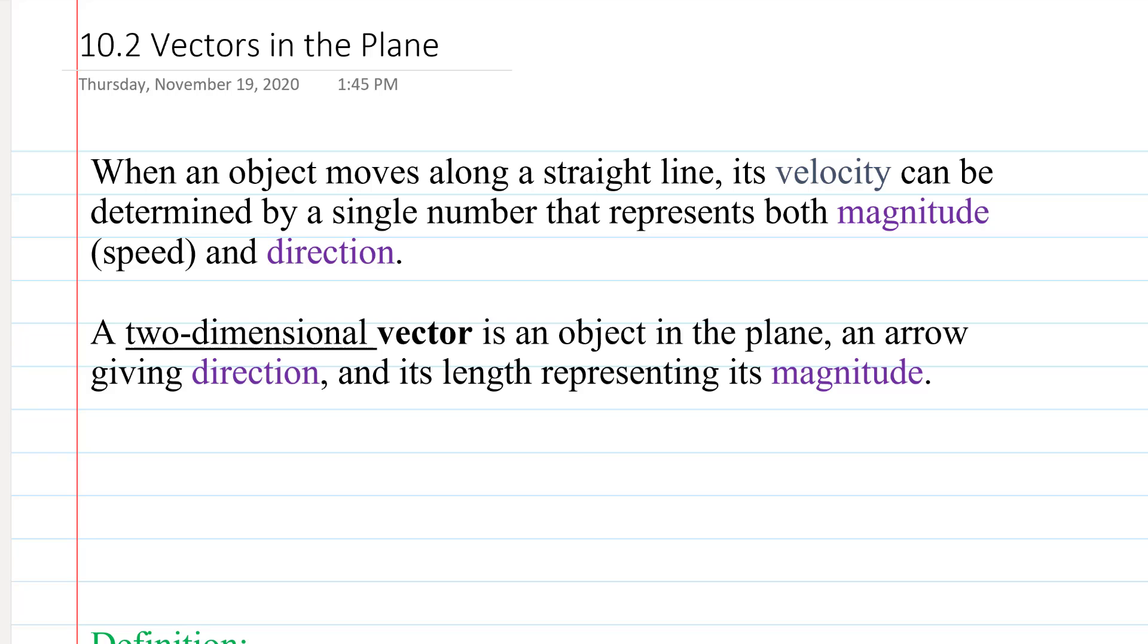So for example, if I had an xy axis like this, and I had a vector that would start here and end here, we would draw that like this, and its direction is represented by which way the vector points, and its magnitude is how long the vector is.